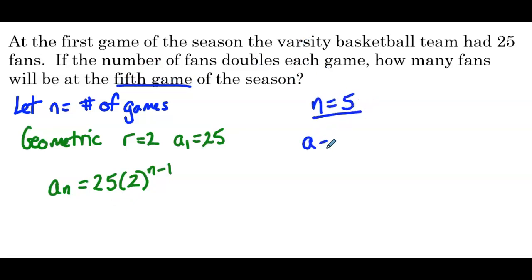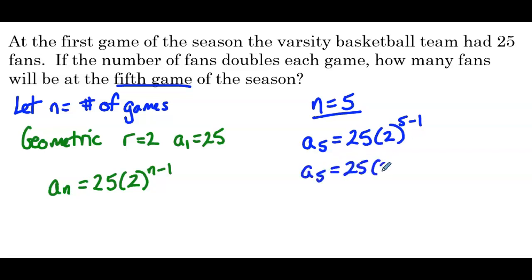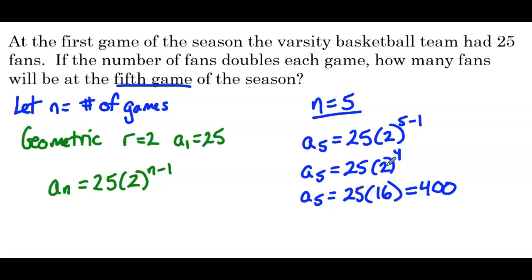We want to know how many fans are going to be at the fifth game, so n equals 5. A sub 5 equals 25 times 2 to the fifth minus 1, so a sub 5 equals 25 times 2 to the fourth, which is 25 times 16, which is 400. So there are going to be 400 fans at the fifth game.